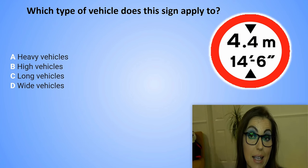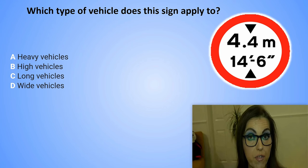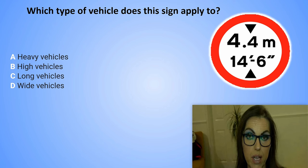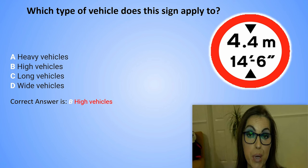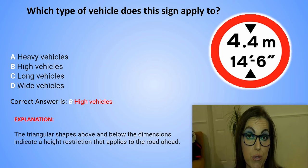Which type of vehicle does this sign apply to? A. Heavy vehicles. B. High vehicles. C. Long vehicles. Or D. Wide vehicles. The correct answer is B. High vehicles. Explanation: The triangular shapes above and below the dimensions indicate a height restriction that applies to the road ahead.